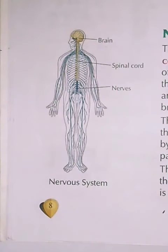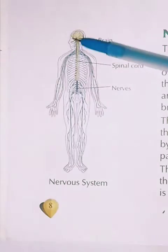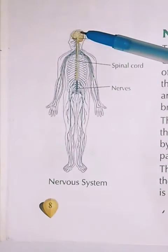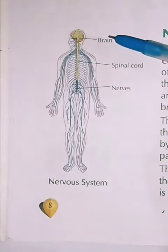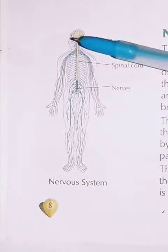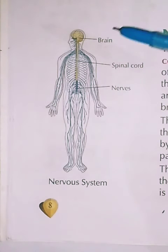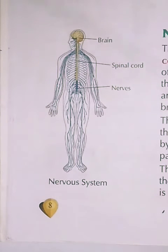The nerves carry messages from different parts of the body to the brain, and these messages are processed by the brain, which then sends a signal to the concerned part to act appropriately according to the situation. You can think of the brain like a computer or calculator that does all the processing.